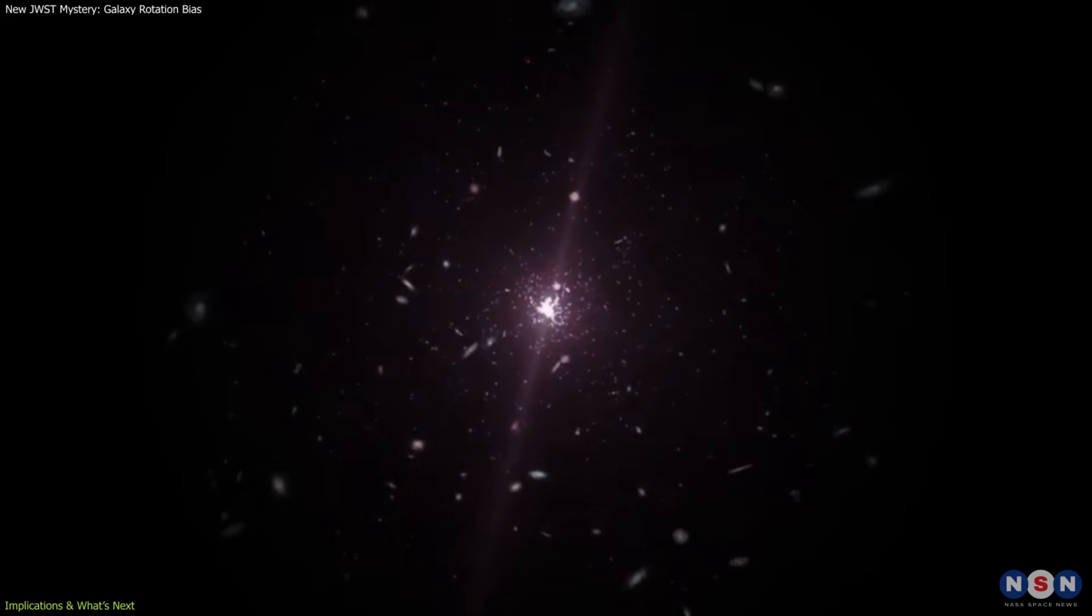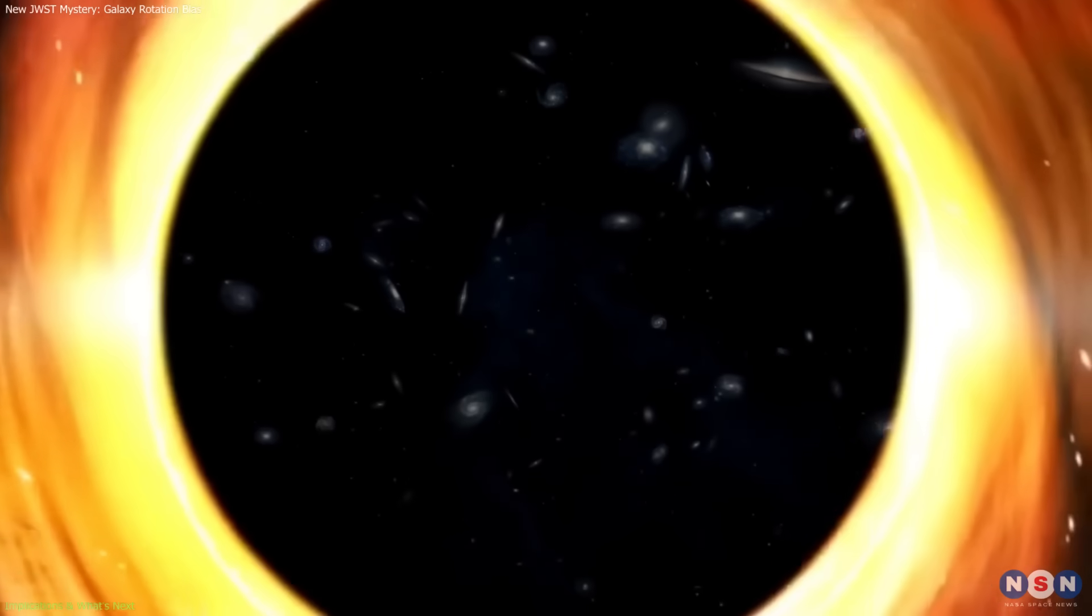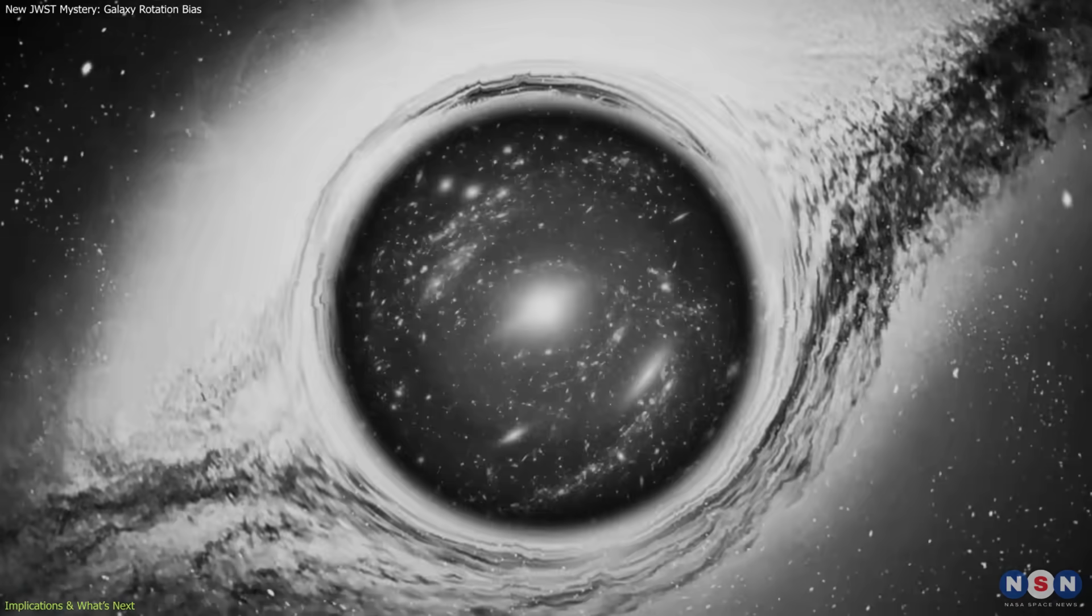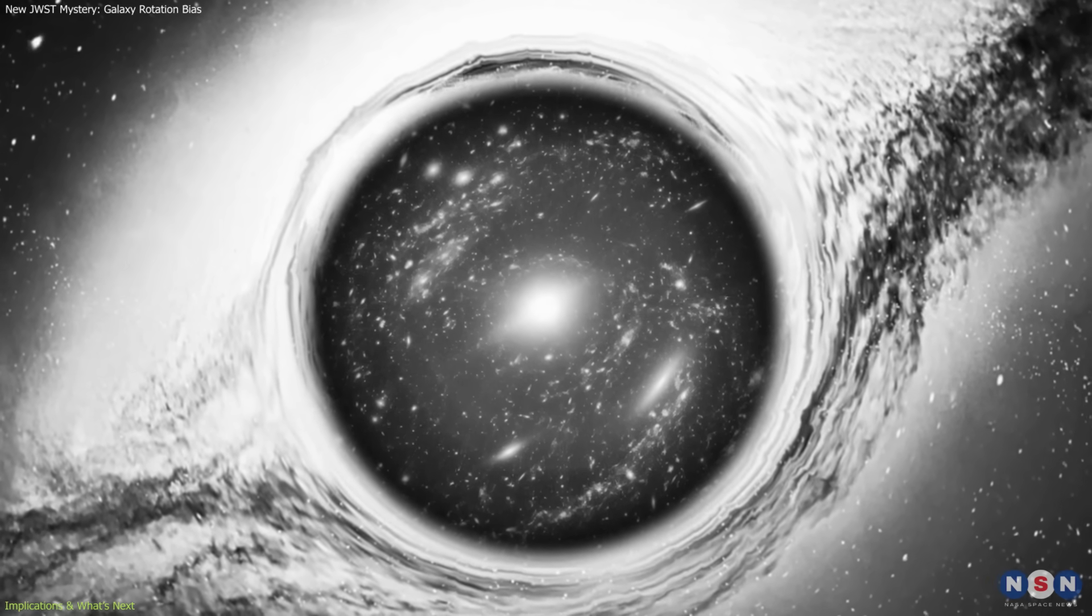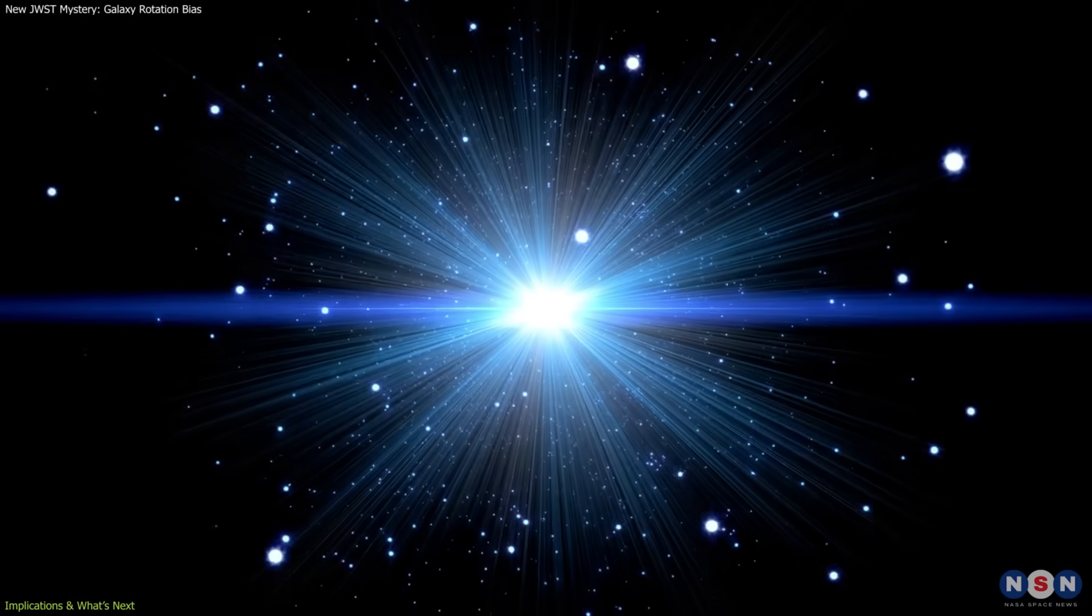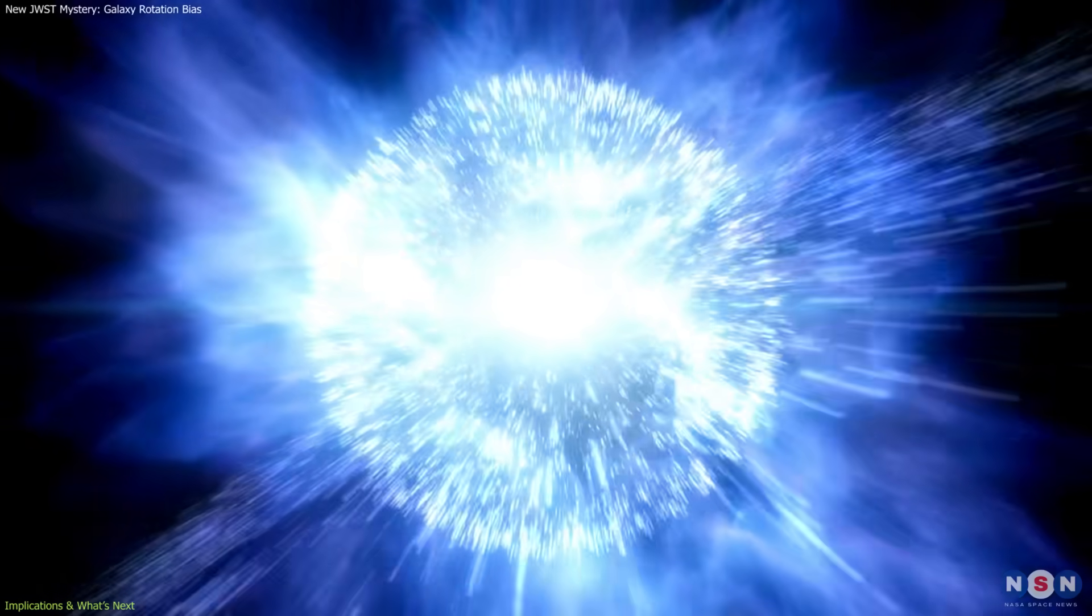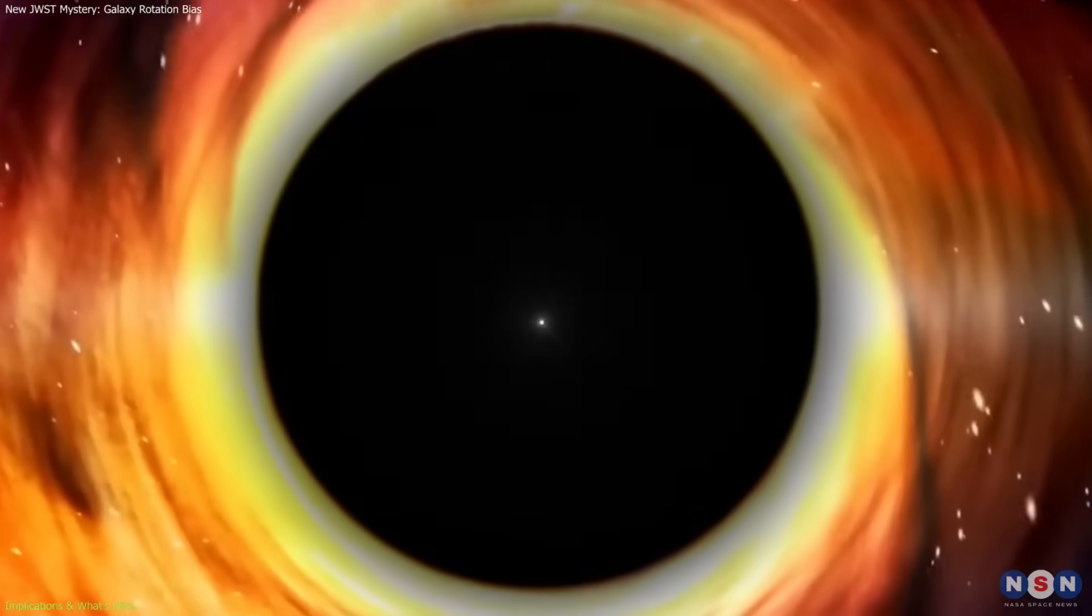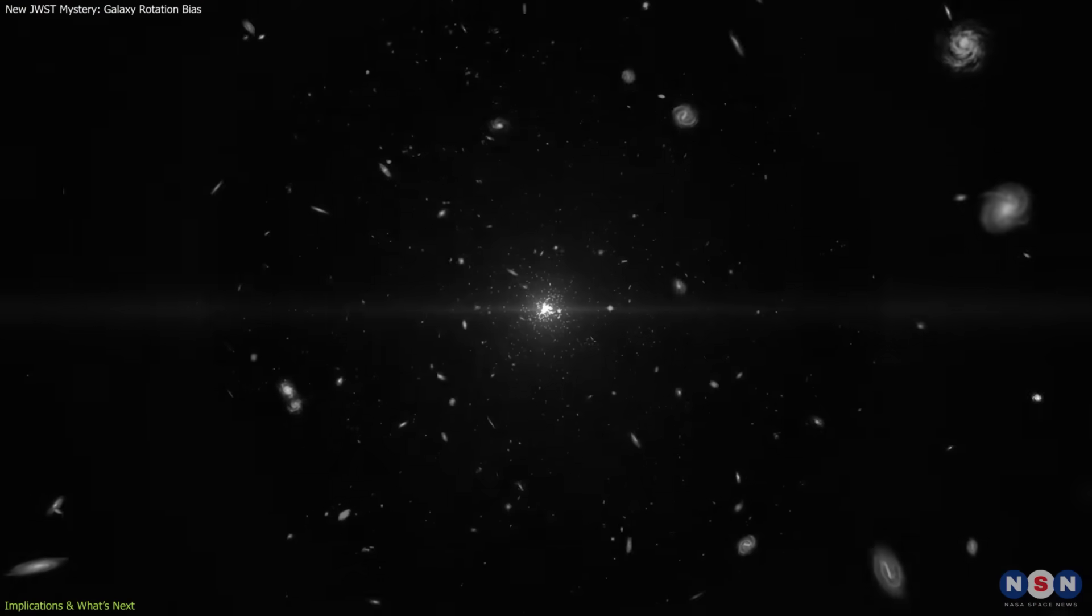A preferred axis would mean rethinking those foundations. For example, the idea of a rotating universe, or one born inside a black hole, would move from speculation to serious scientific consideration. Such a model could also provide new ways to think about the Big Bang, not as a singular beginning, but as the interior view of a collapse event in a larger reality.